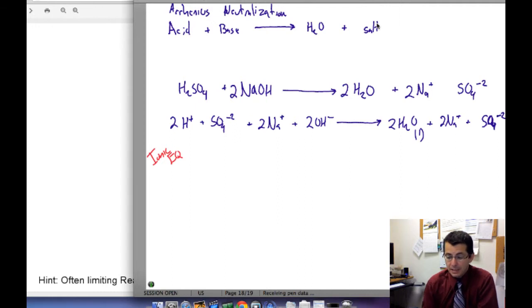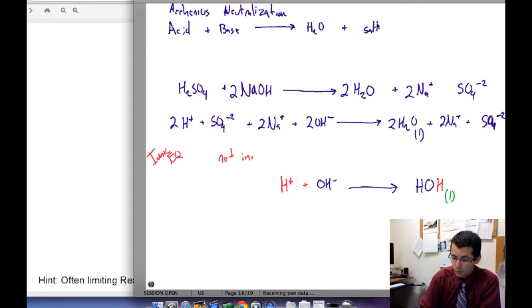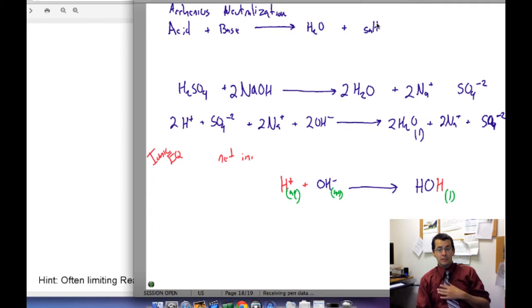Now for any acid-base neutralization, at least in Arrhenius, the net ionic is always the same. It's always going to be H+ + OH- to create our water molecule. This is liquid water and these are both aqueous. That's a stereotypical acid-base neutralization. They always create this water molecule when you are dealing with Arrhenius acids and Arrhenius bases.